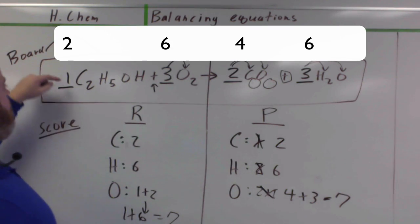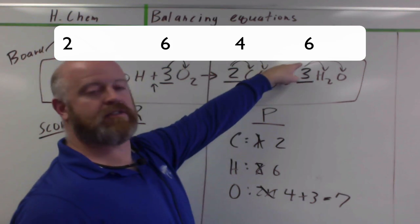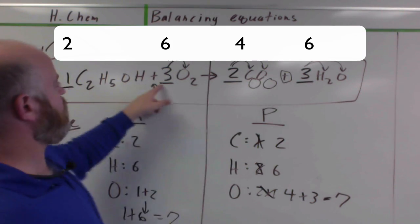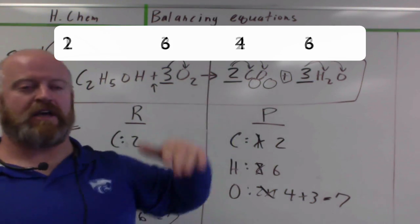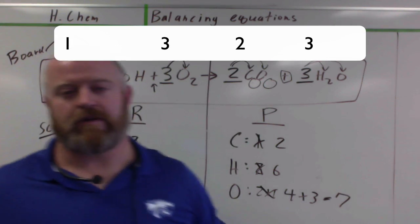So for example, you might find, you might get a 2, 6, 4, 6. Well, if you have a 2, 6, 4, 6, you can reduce it down to a 1, 3, 2, 3. So we do that.